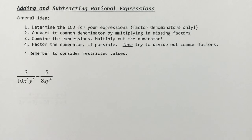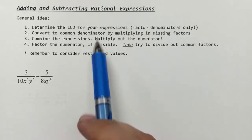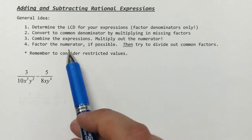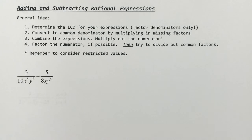The general idea of adding and subtracting rational expressions: the first thing you need to do is determine the LCD for your expressions, which means you're going to factor the denominators. You're not going to factor the numerators as we did for simplifying, multiplying, and dividing — only the denominators. Then convert to that common denominator by multiplying in missing factors. Combine the expressions; up on top you'll have something that needs to be multiplied out and combined to get a polynomial. Once you have that polynomial, try to factor the numerator if you can, and only then will you try to divide out common factors.